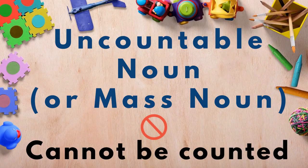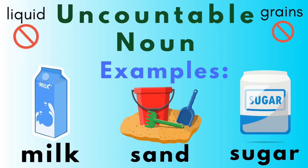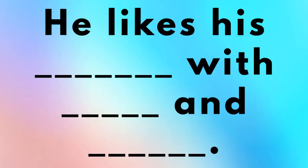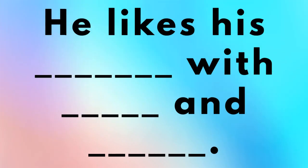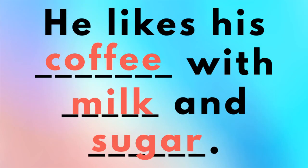Uncountable nouns, or mass nouns, cannot be counted. Here are some examples: milk, sand, sugar, liquid, or grains cannot be counted. He likes his coffee with milk and sugar.